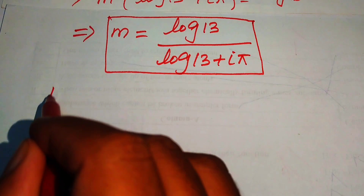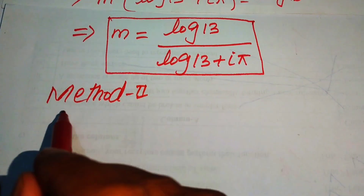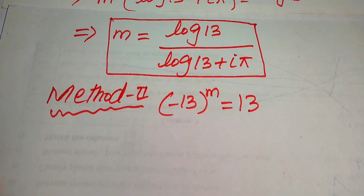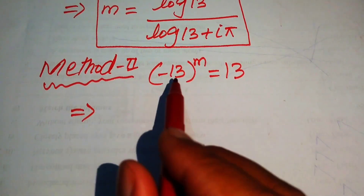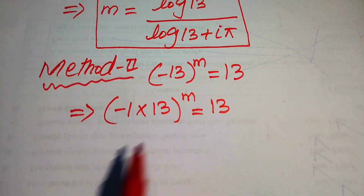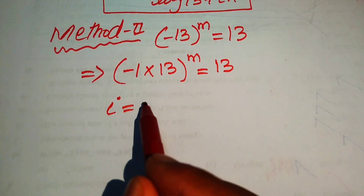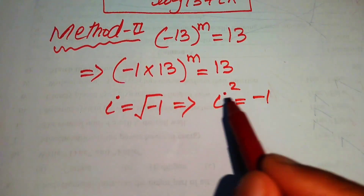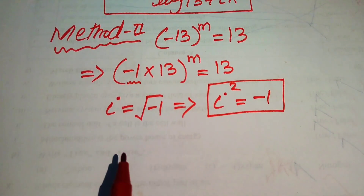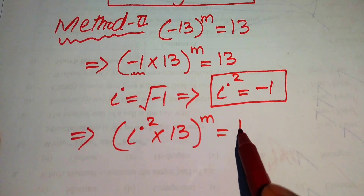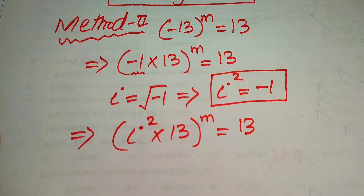In the second method, we start again with -13^m = 13. We rewrite the left side as (-1 · 13)^m = 13. Using the definition of the imaginary unit iota: i = √(-1), squaring both sides gives i² = -1. We replace -1 with i², giving (i² · 13)^m = 13.